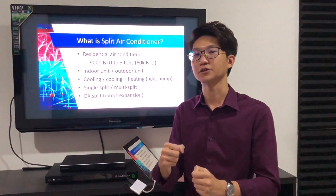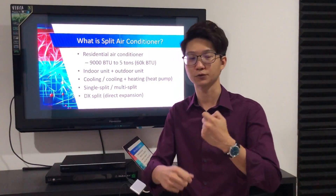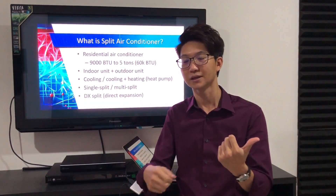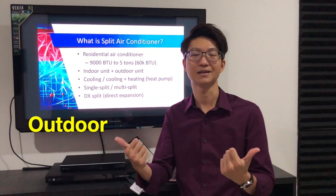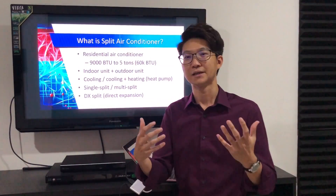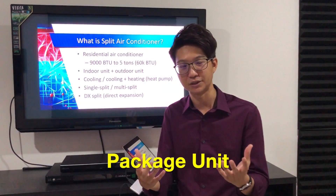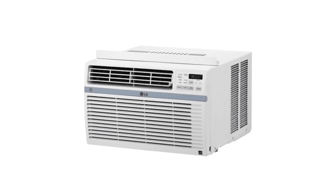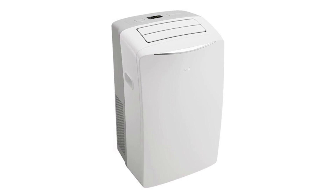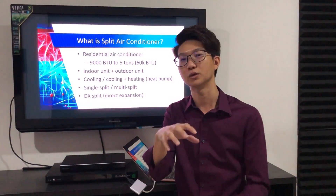The characteristic of a split air conditioner is that they call it 'split' because it has two separate units: the indoor unit inside the house and the outdoor unit outside the house. The non-split air conditioner is what we call the package unit — the window air conditioner or the portable air conditioner. Just one body, they are compact, two-in-one.